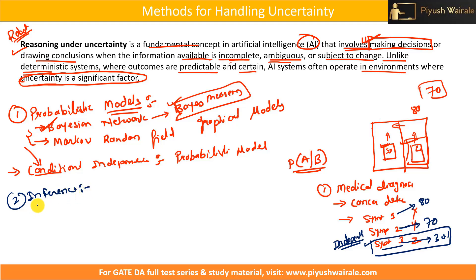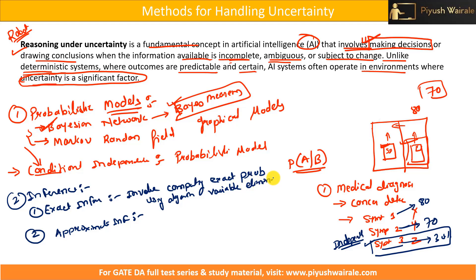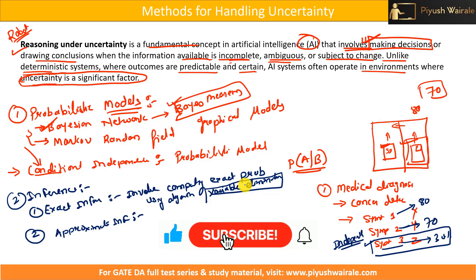Next in the syllabus is inference, which has two types: exact inference and approximate inference. Exact inference involves computing the exact probability using algorithms like variable elimination, which is specifically mentioned in our GATE syllabus. We will focus on variable elimination for exact inference.